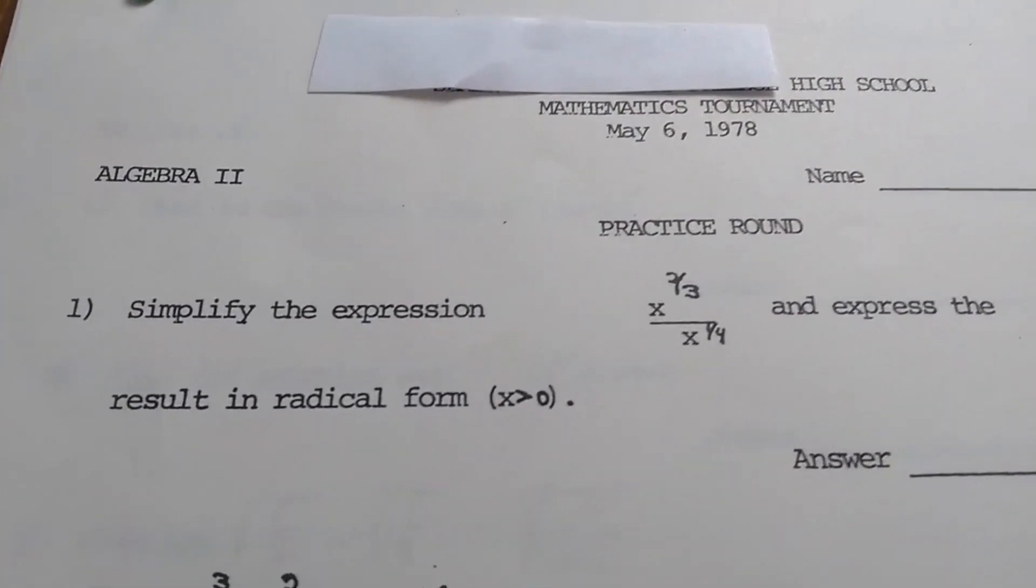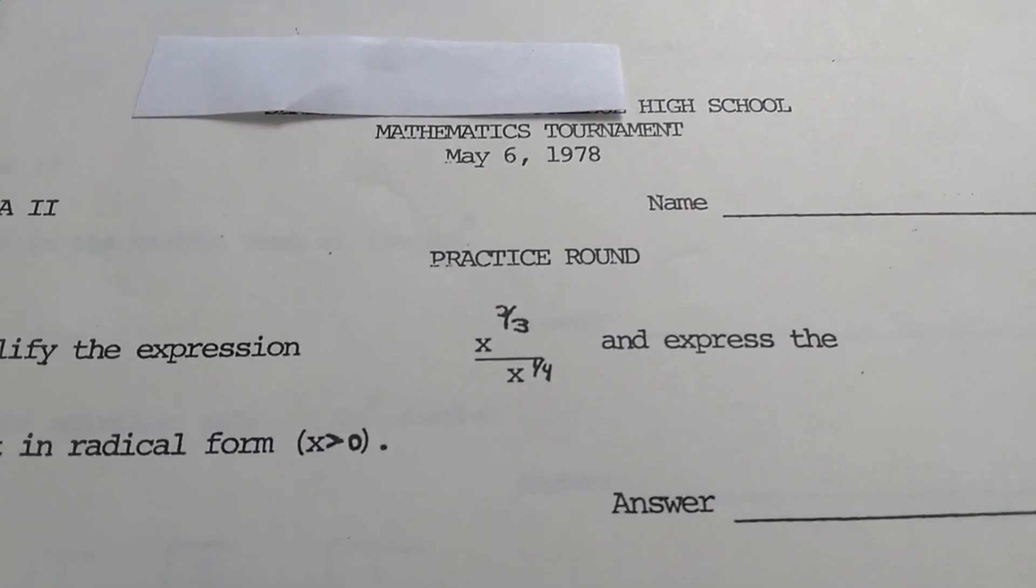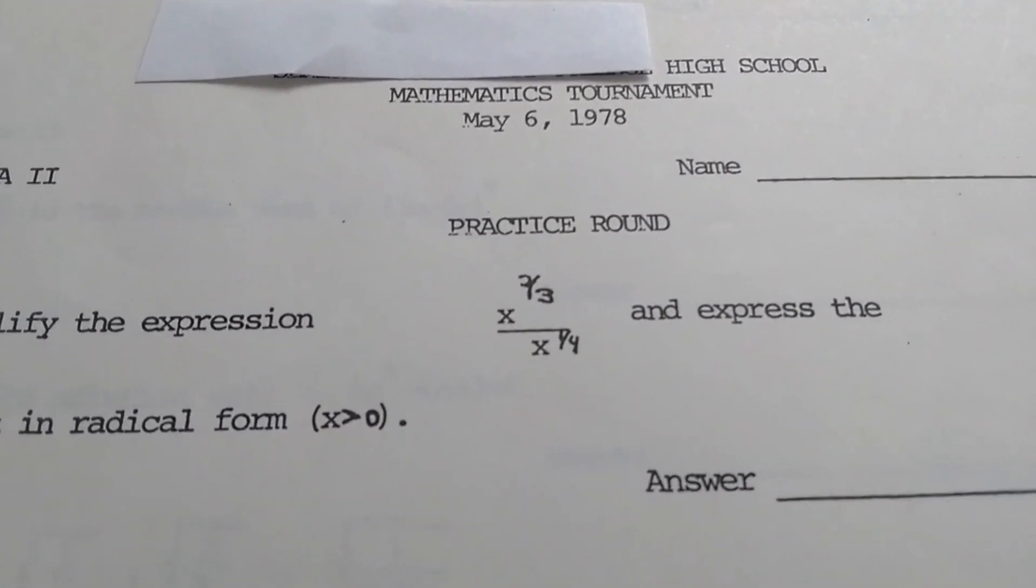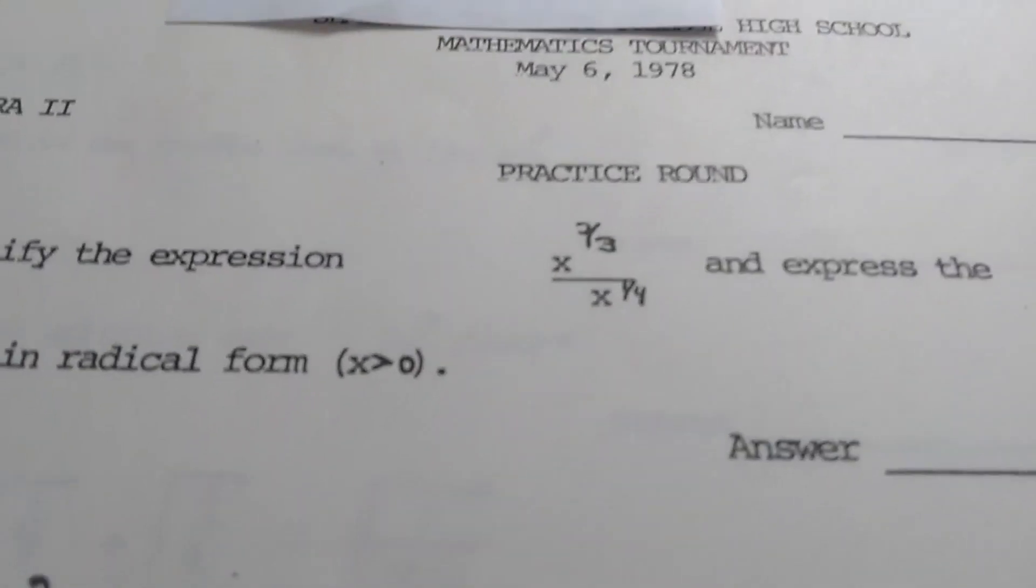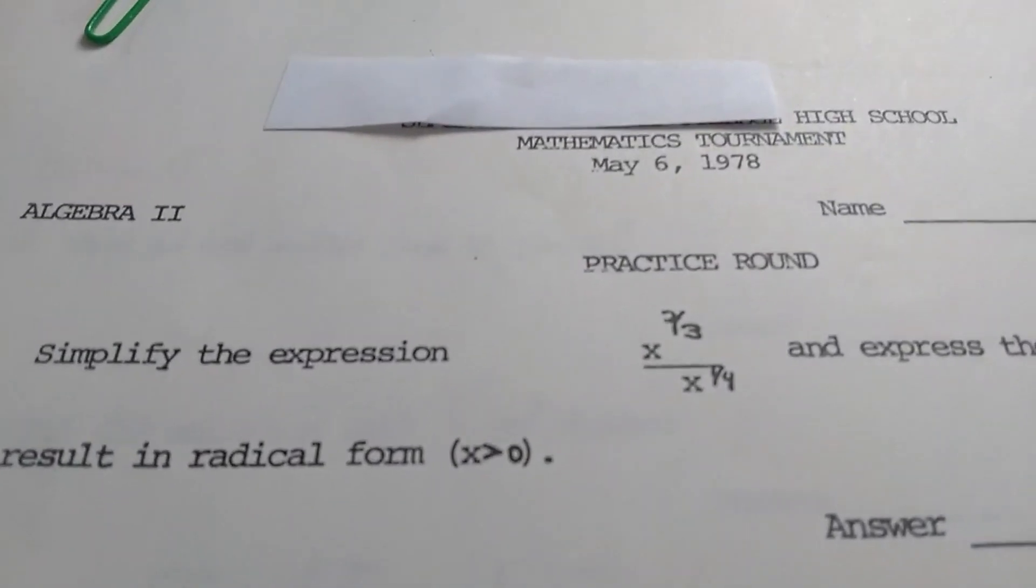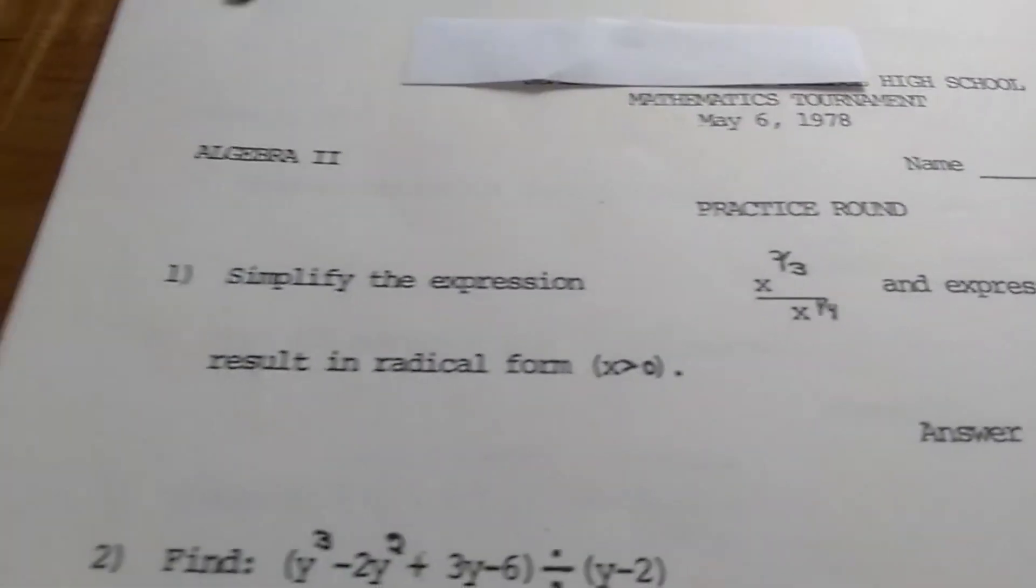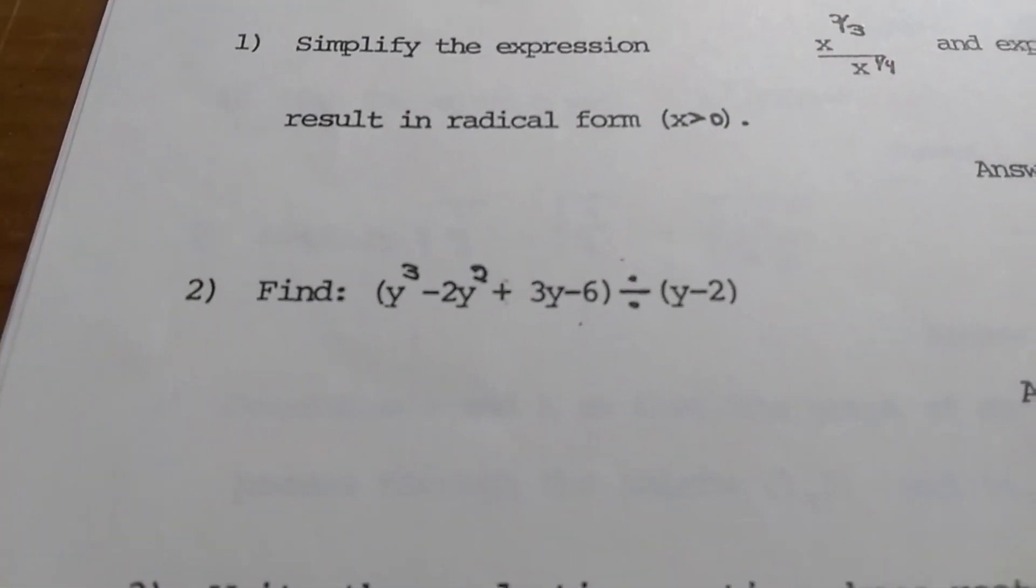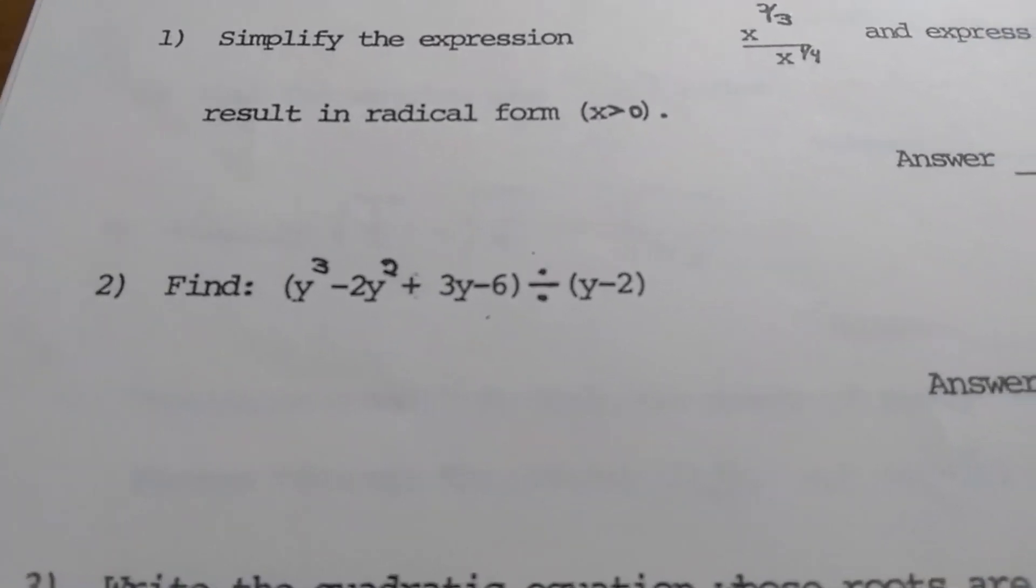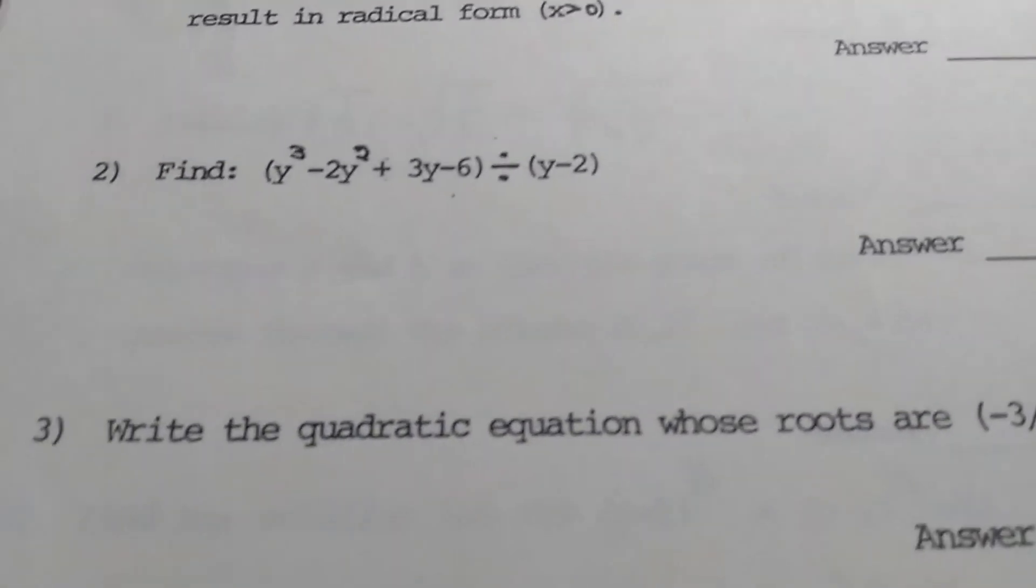So simplify the expression. I like how it's penned in. I guess 1978 was a long time ago. You can barely read it, and if I try to read it without looking at my camera, it's just as bad. It's x to the two-thirds over x to the one-fourth. Same thing here. It looks like the exponents were handwritten in. They handwrote the exponents.